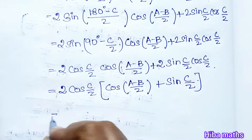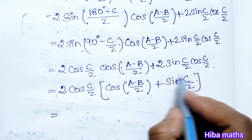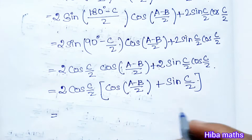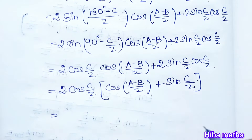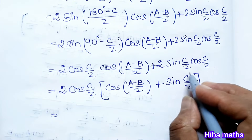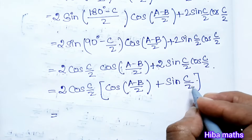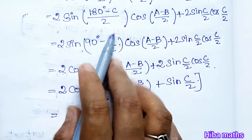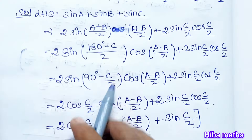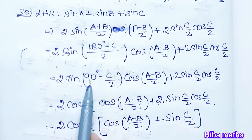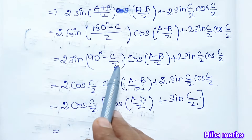In the next line, we use the identity: sin θ = cos(90° − θ). So sin((a+b)/2) becomes cos(90° − (a+b)/2). Since (a+b)/2 = 90° − c/2, we substitute: 90° minus (a+b)/2 equals c/2.